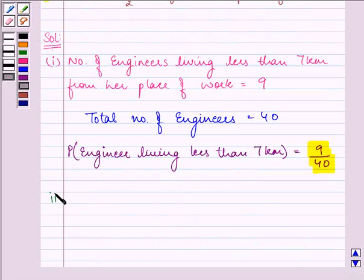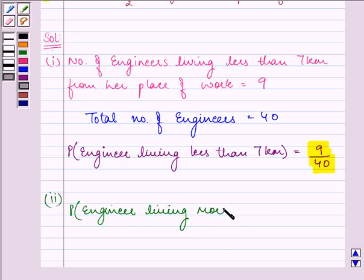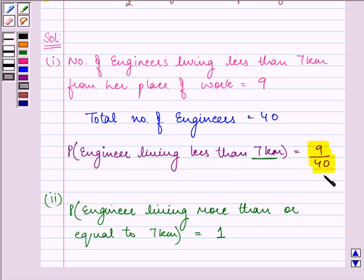Second part says find out the probability that the engineer is living more than or equal to 7 km. We know that the probability of occurring an event is always 1. The probability that engineer is living less than 7 is 9 by 40, that means the remaining will be the required probability for the second part.